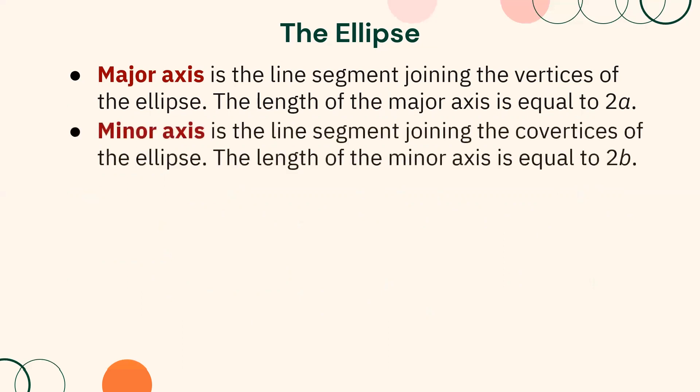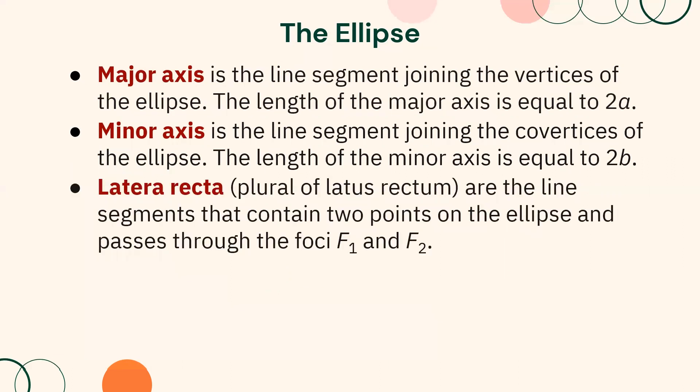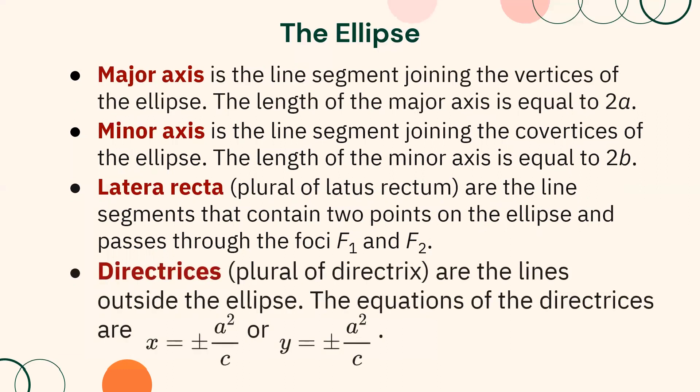The minor axis is the line segment joining the covertices of the ellipse, with length equal to 2b. Latera recta are the line segments that contain two points on the ellipse and pass through the foci f sub 1 and f sub 2. Directrices are the lines outside the ellipse with equations x equals positive or negative a squared over c, or y equals positive or negative a squared over c.